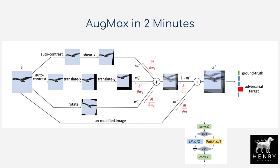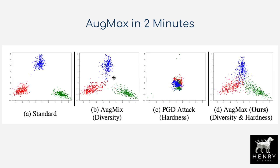Another key detail is the dual batch normalization scheme, splitting features to have separate normalization for original and augmented images, along with instance normalization to help normalize features in high-dimensional intermediate layer feature maps. This is a quick overview of the Augmax schema, followed by an overview of the intuition.